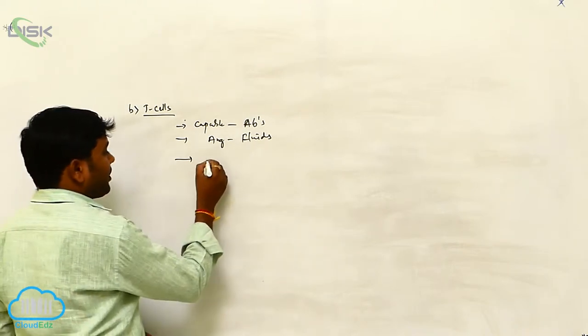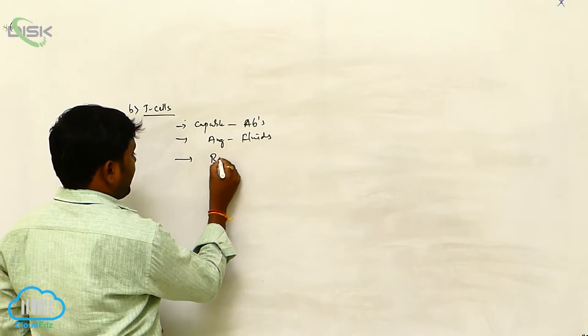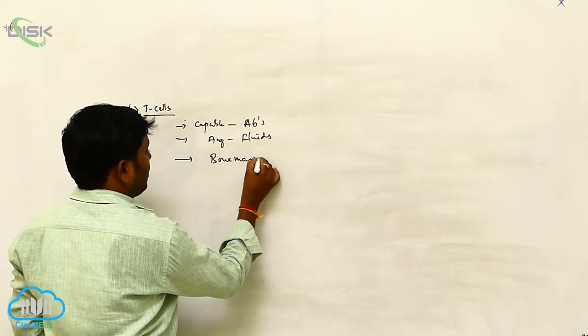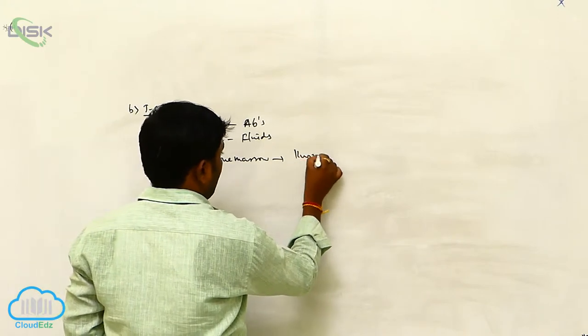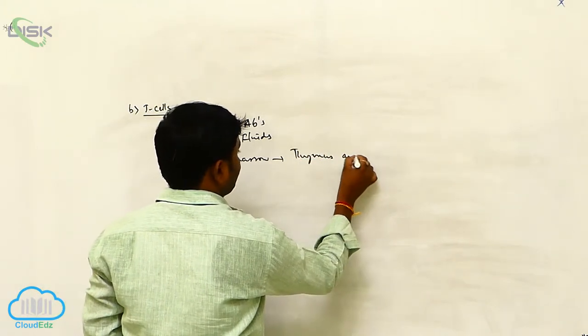Generally, these T cells are produced from the bone marrow and reach up to the thymus, and then transform into two cells.